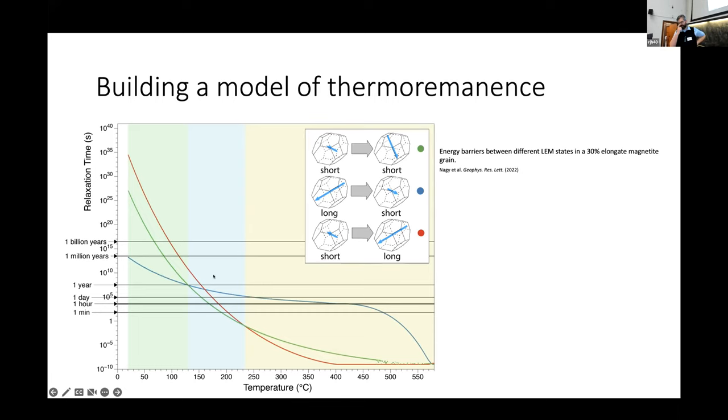Then we have this blue region in the middle. This is a critical region. What's important about this region is that the speed or the cooling rate at which you pass through this blue region determines how and what your grain is going to record.